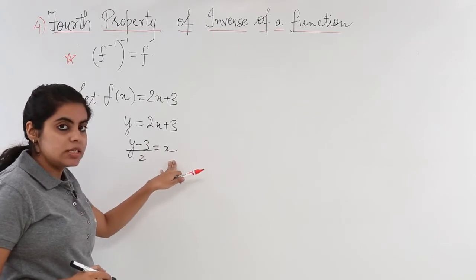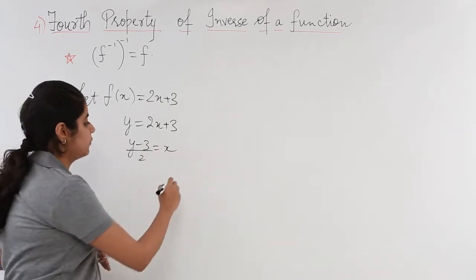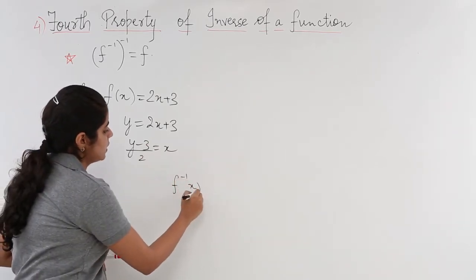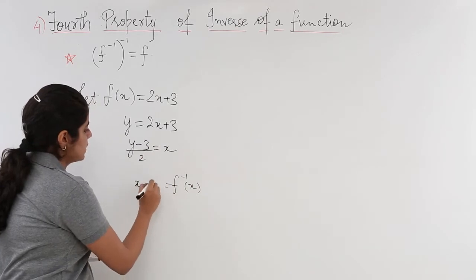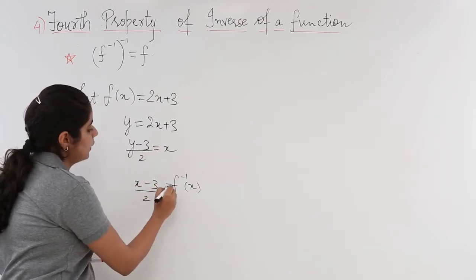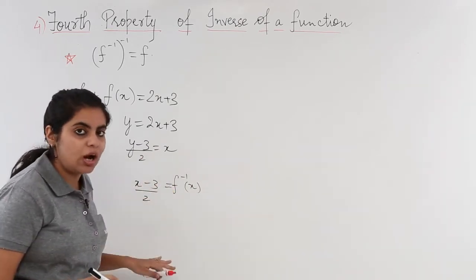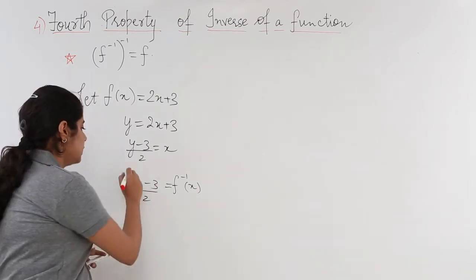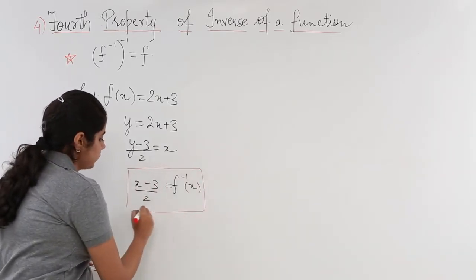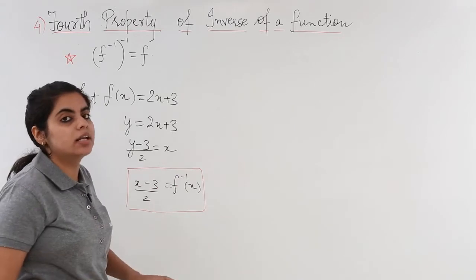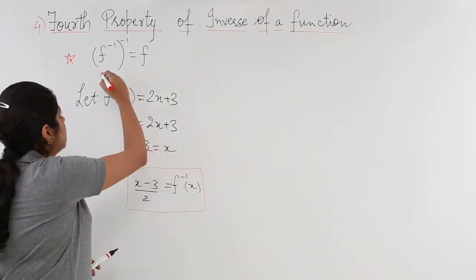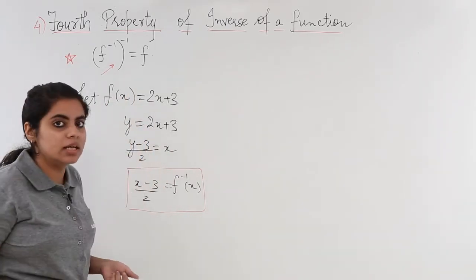Now this is x and this is y. I can replace it by f inverse of x = (x - 3)/2. We've already seen in previous videos how to do this. This gives me f inverse of x, so the first step of finding f inverse is done.